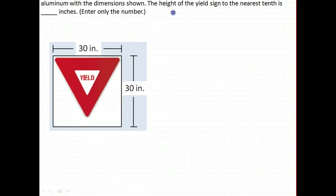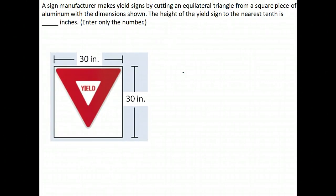All right, let's take a look at some of the project type questions. This is not your exact question, but it's very much like it to help you work through it. It says a sign manufacturer makes yield signs by cutting an equilateral triangle from a square piece of aluminum with the dimensions shown. The height of the yield sign to the nearest tenth of an inch is what? So what they're saying is they take a square piece of aluminum and then to create the yield sign, they cut a triangle out of it. Now notice the triangle doesn't go clear to the end here, so I know the height of the triangle is not 30.